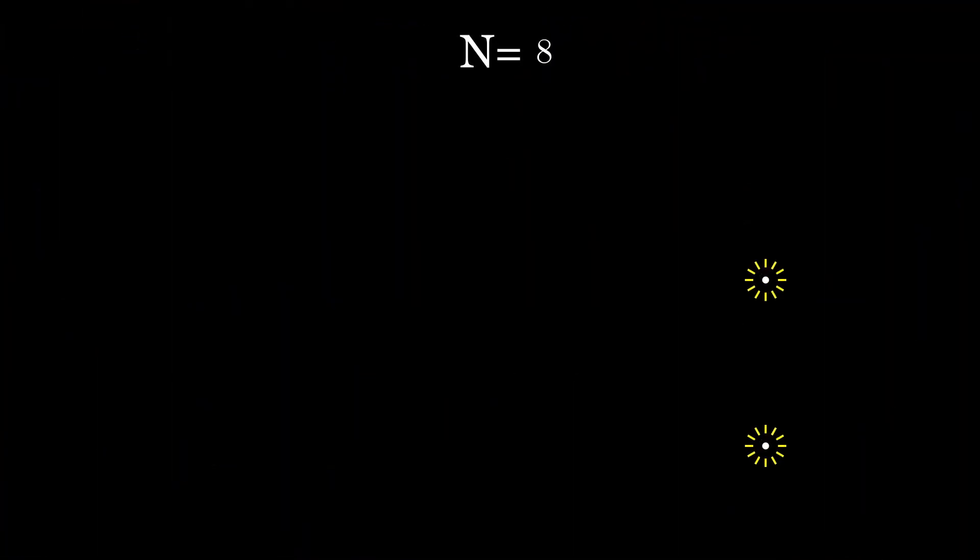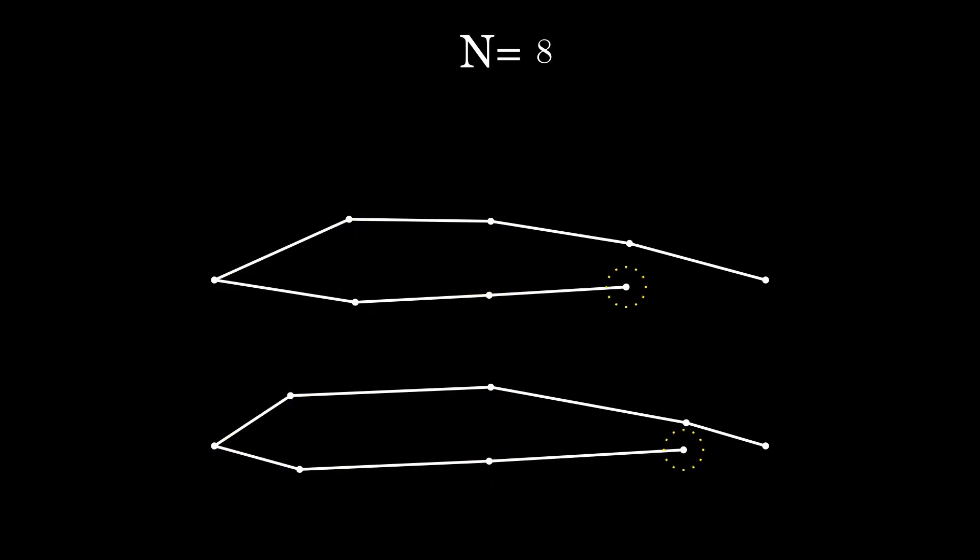So to begin with we need to start with discretizing the airfoil. We have two options with how we go about spacing. On the top we have equal and the bottom we have cosine spacing.